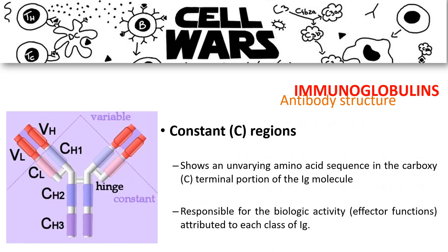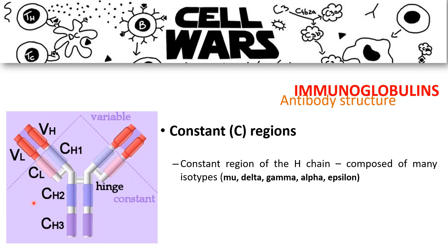The constant region shows no variation in the amino acid sequence at the carboxyl-terminal portion of the Ig molecule, and is responsible for the biologic activity attributed to a specific class of Ig. For example, IgE has the ability to stimulate an allergic immune response because of its constant region interacting with its effector cells. The constant region contains part of the heavy chain composed of the isotype: mu, delta, gamma, alpha, and epsilon.